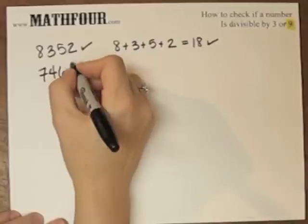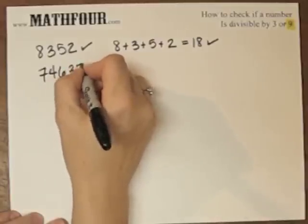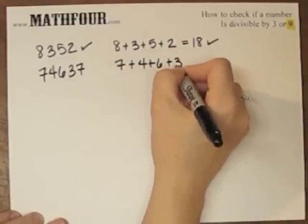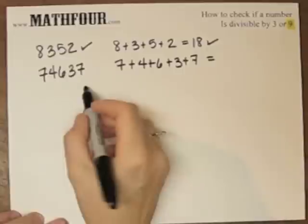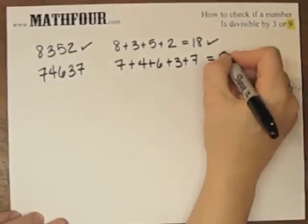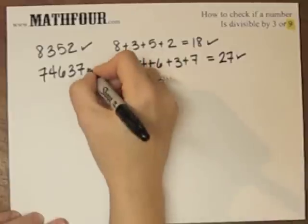How about 74,637? So add them up. So we have 11, 17, 27. 27 is divisible by 9, so so is this.